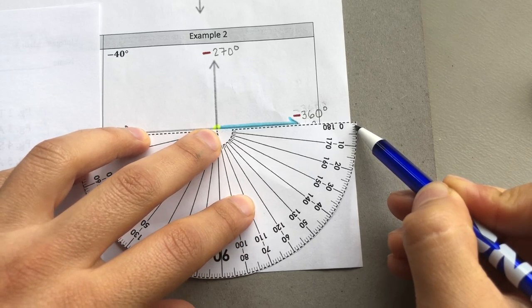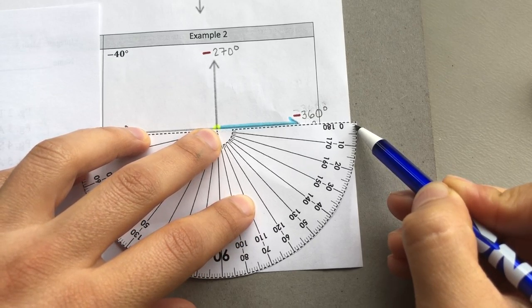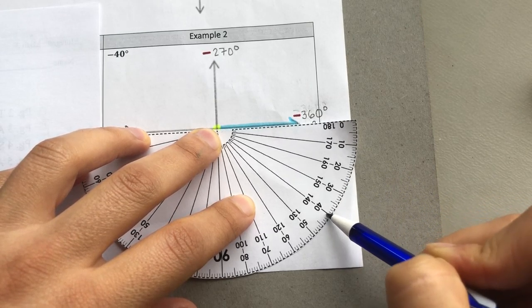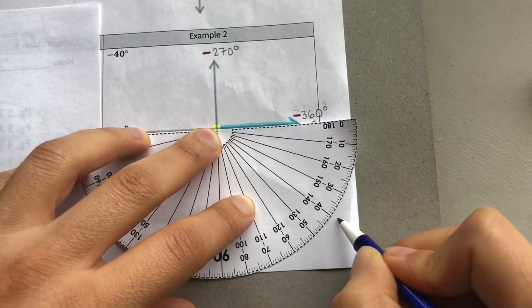We want to go negative 40. So there's negative 10, negative 20, negative 30, negative 40. This is where we stop.